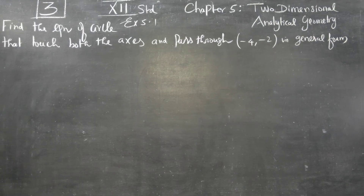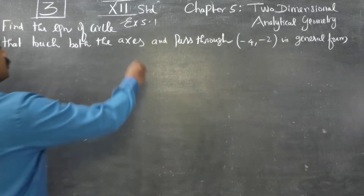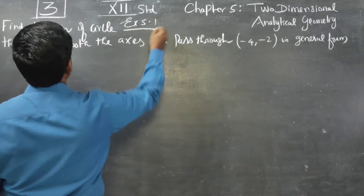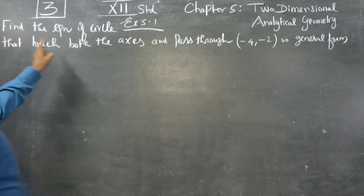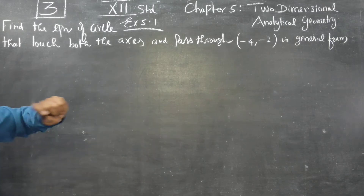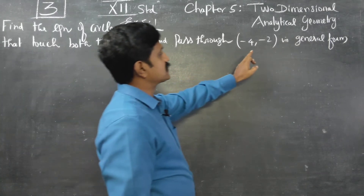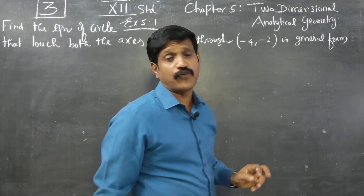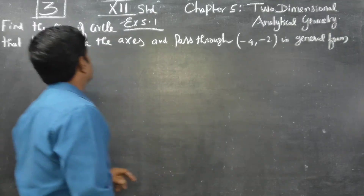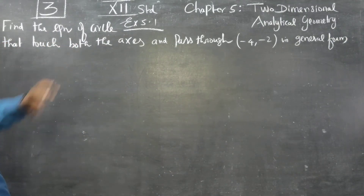Dear 12th standard students, chapter number 5, two-dimensional analytical geometry, exercise number 5.1, sum number 3: find the equation of the circle that touches both the axes and passes through minus 4 comma minus 2 in general form. Now, they are asking to find the equation of the circle.